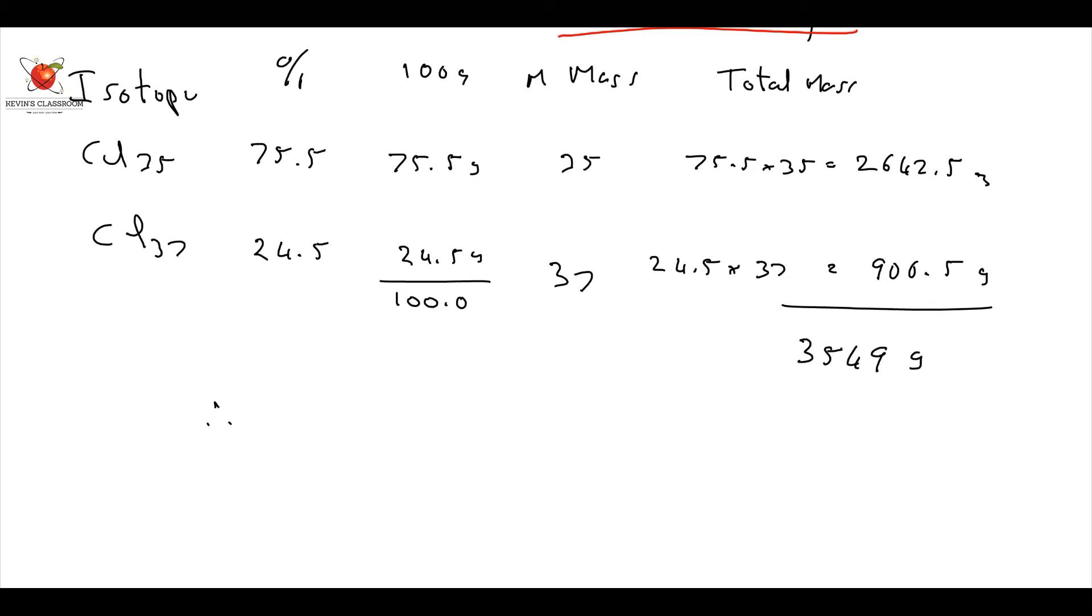Therefore, I say that is my molecular mass, the relative mass. The relative mass is going to be equal to 3549. This is in 100 grams, remember? 3549 over 100, which is going to be 35.49 grams per mole.